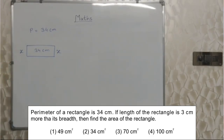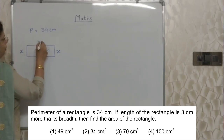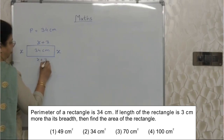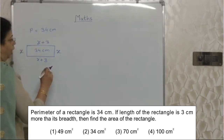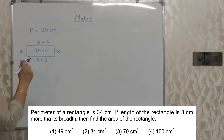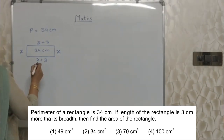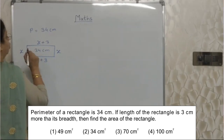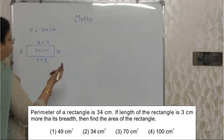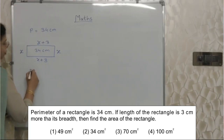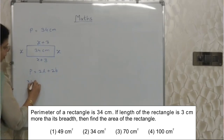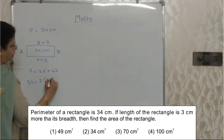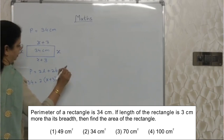Length is 3 cm more than breadth, so length will be x plus 3. I am purposely not writing 'B' for breadth here, because sometimes it is misunderstood as 6 in a hurry. So avoid using B — use x. Now we need to find out the value of x with the help of this perimeter. The formula of perimeter of a rectangle is 2 times length plus 2 times breadth. So perimeter is 34, 2 times length is x plus 3, and breadth is 2x.